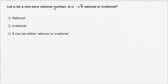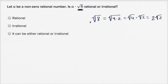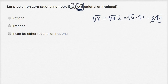Let A be a non-zero rational number. Is A times the square root of eight rational or irrational? The key here is that the square root of eight is irrational. Square root of eight equals the square root of four times two, which equals two times the square root of two — an irrational number. If you multiply a rational times an irrational, you get an irrational. So this is going to be, for sure, irrational.